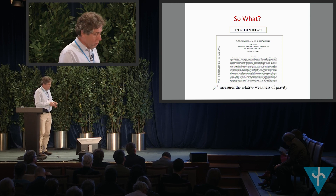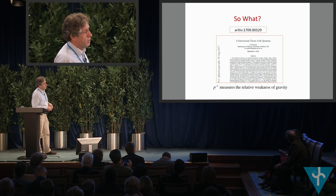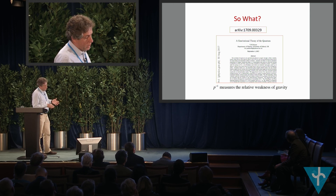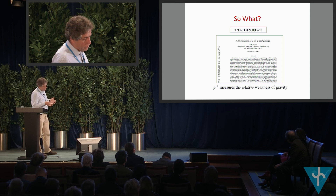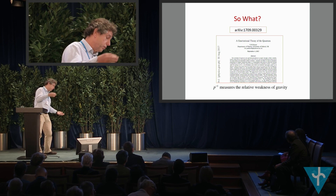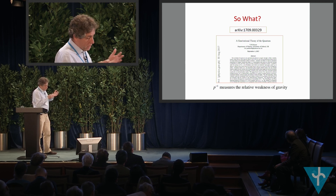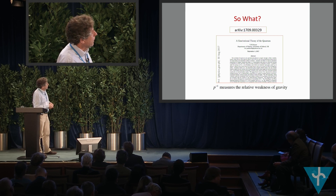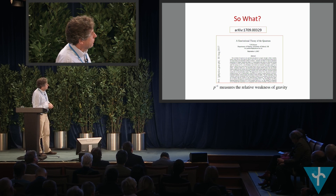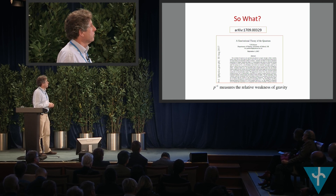Why do I pursue this? I did a PhD in general relativity many years ago, strongly motivated by Roger, and felt that we are not going to synthesize gravitation and quantum physics within the overarching framework of quantum theory. I've been seeking an alternative approach: representing quantum physics within the overarching framework of a geometry that is causal and deterministic. My proposal is that this is it. Finally, this p of p-adic — the inverse of p — would be a measure of the relative weakness of gravity. Thank you.